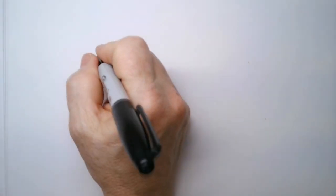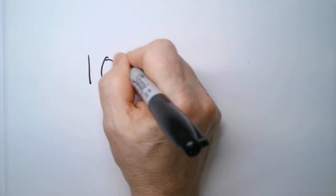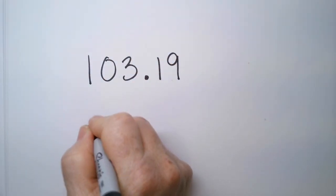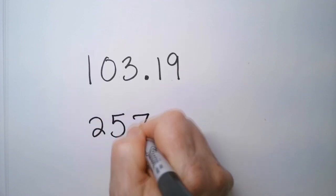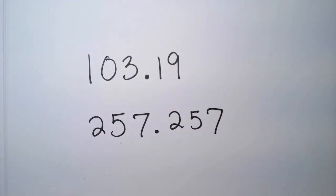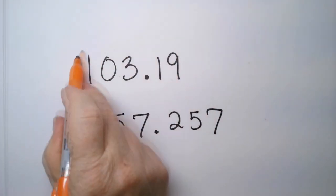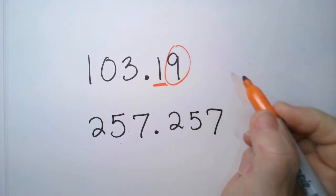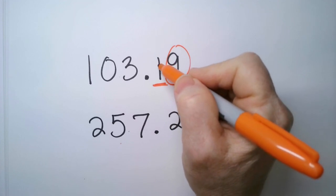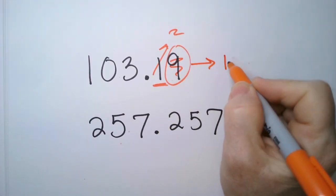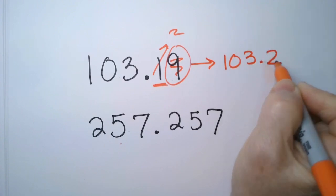Let's try a couple more, just so you're comfortable. If I have 103 and 19, and I also have 257 and 257. Let's round this top one up to the nearest tenth. So here's your tenth. We see this is higher than 5, and so this is going to round up to a 2. We still get rid of that. This becomes 103.2, rounded to the nearest tenth.